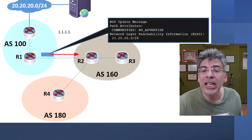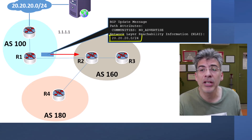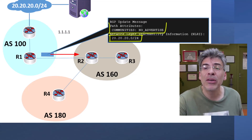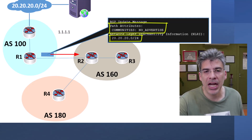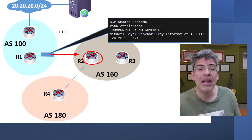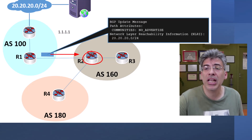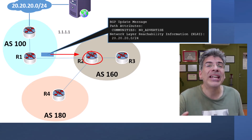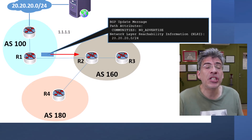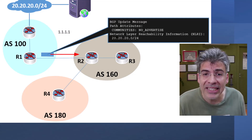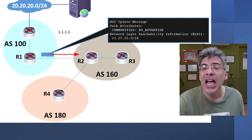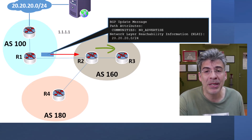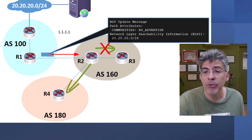If we take a look at the BGP update, we will see that for the 20.20.20.0/24 route there is a BGP attribute attached, which is the well-known community of no-advertise. R2 receives this update and processes it. It will place the 20.20.20.0/24 network into its own BGP table, but the community affects how it advertises it. The no-advertise community states that a BGP router must not advertise this route to any other BGP neighbors — so R2 does not advertise the network to either its iBGP neighbor R3 or its eBGP neighbor R4.